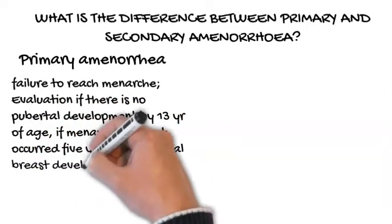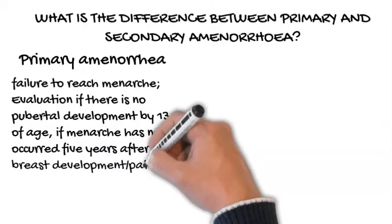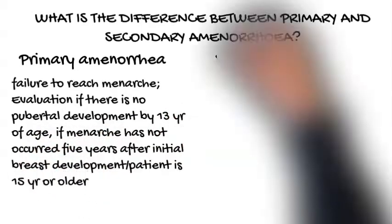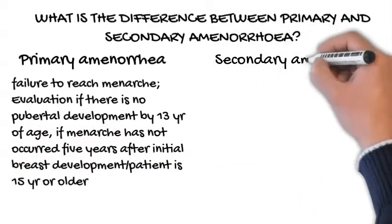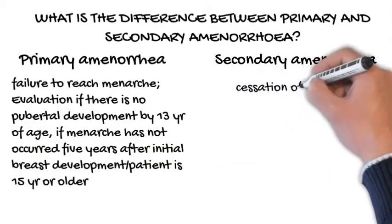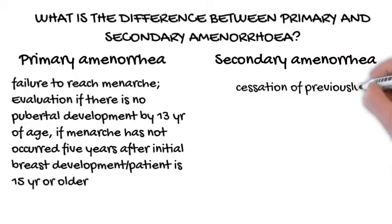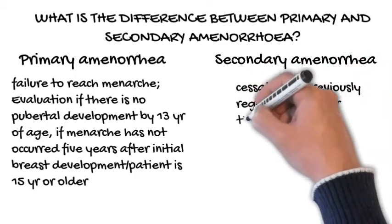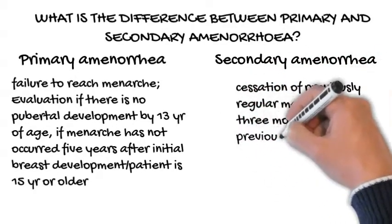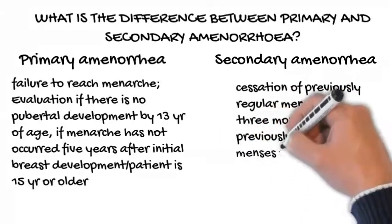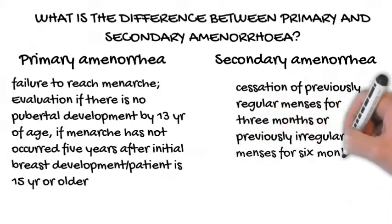Secondary amenorrhea is characterized as the cessation of previously regular menses for 3 months, or previously irregular menses for 6 months. In contrast, a normal menstrual cycle typically occurs every 21 to 35 days.